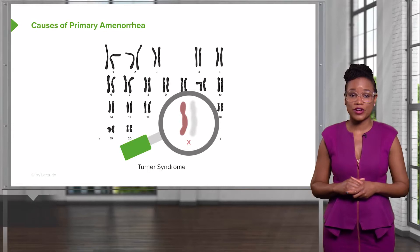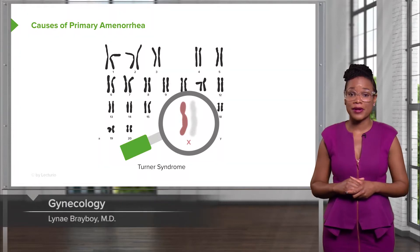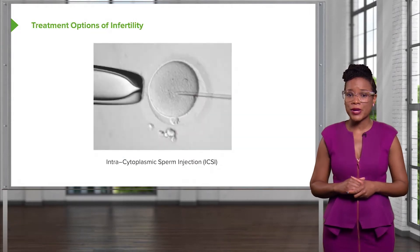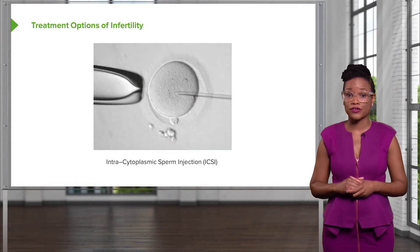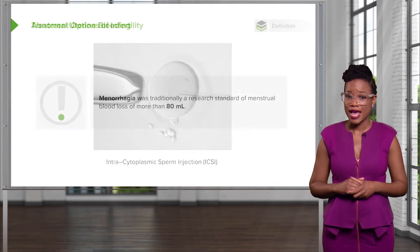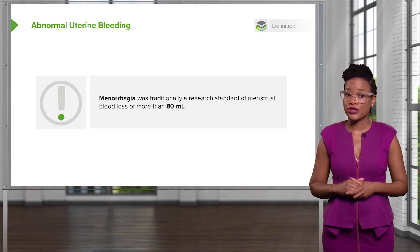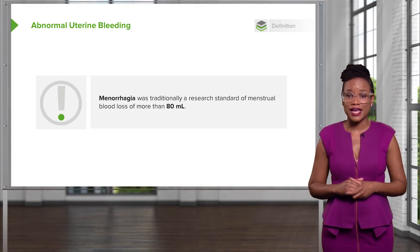Do you know the many different causes for primary amenorrhea and how to find out which one is applicable for your patient? Are you able to outline the possible treatments for infertile women and couples? And can you help patients that present with abnormal uterine bleeding? If you answered no to any of these questions, then you should take this course now.